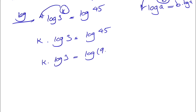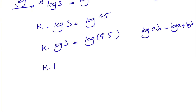For log of 45, we can write 45 as 9 times 5. From the laws of logarithms, log of a times b equals log of a plus log of b, so we have k times log of 3 equals log of 9 plus log of 5.